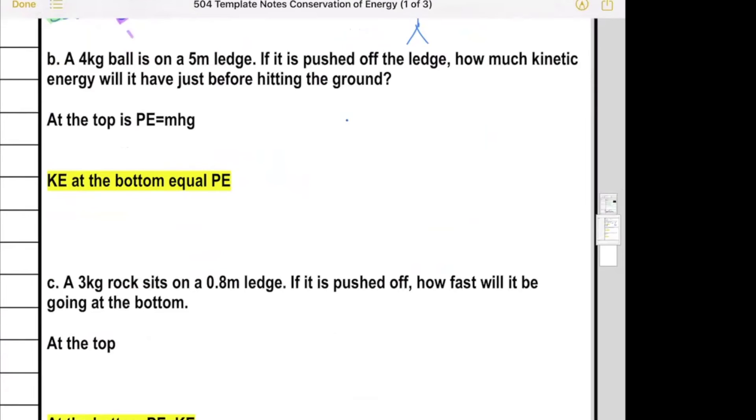It's the same kind of thing here. If a ball is on a ledge, a four kilogram ball on a ledge, you've got your ledge. There's a ball on a ledge and the height is five meters. It's a four kilogram ball. Find the PE. We sure can because mass is four kilograms, height is five meters, gravity is always 9.8 meters per second squared. That's going to be 196 joules. So up here it's got a PE of 196.